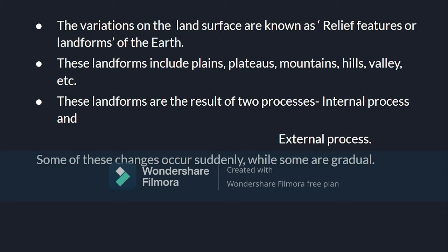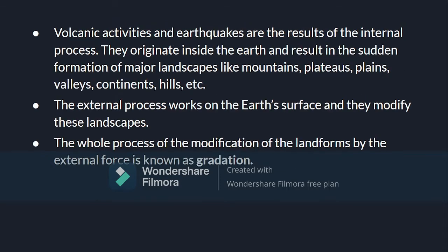These landforms are the result of two processes: the internal process and the external process. Some of these changes occur suddenly while some are gradual. When we talk about the internal process, we can see volcanic activities as well as earthquakes. These originate inside the earth and result in the sudden formation of major landscapes like mountains, plateaus, plains, and valleys.